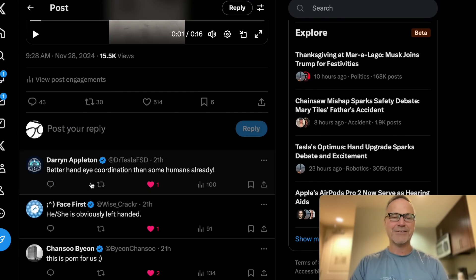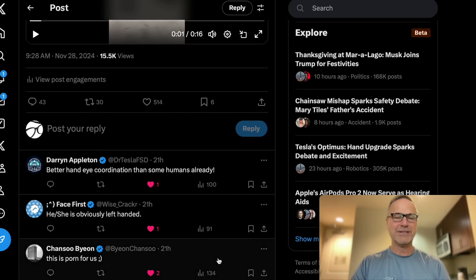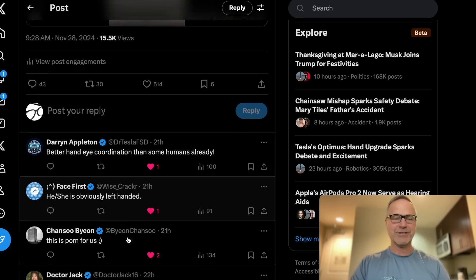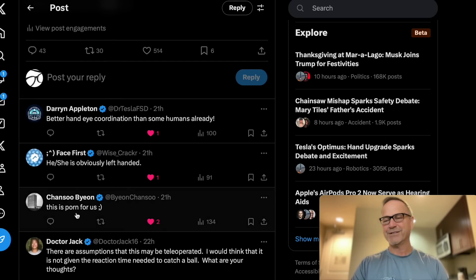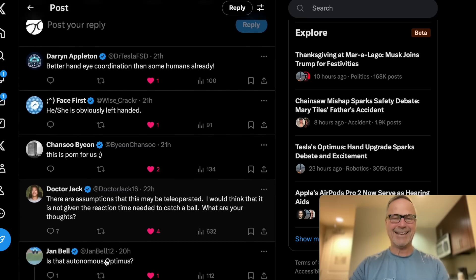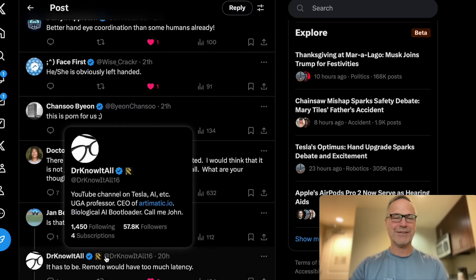This is very challenging. This is something that separates humans out from other creatures is the ability to catch balls. Dogs can catch balls and things like that too, but anyway, really impressive ability here. As Darren here says, better hand-eye coordination than some humans. And then Chanson says, this is porn for us, which it kind of is. It's just like holy crap. I was at Thanksgiving, just kind of hanging out with family, and I saw the video. Really cool of Tesla to drop this first thing in the morning on Thanksgiving Day, so thanks guys. Happy Thanksgiving to all of us.